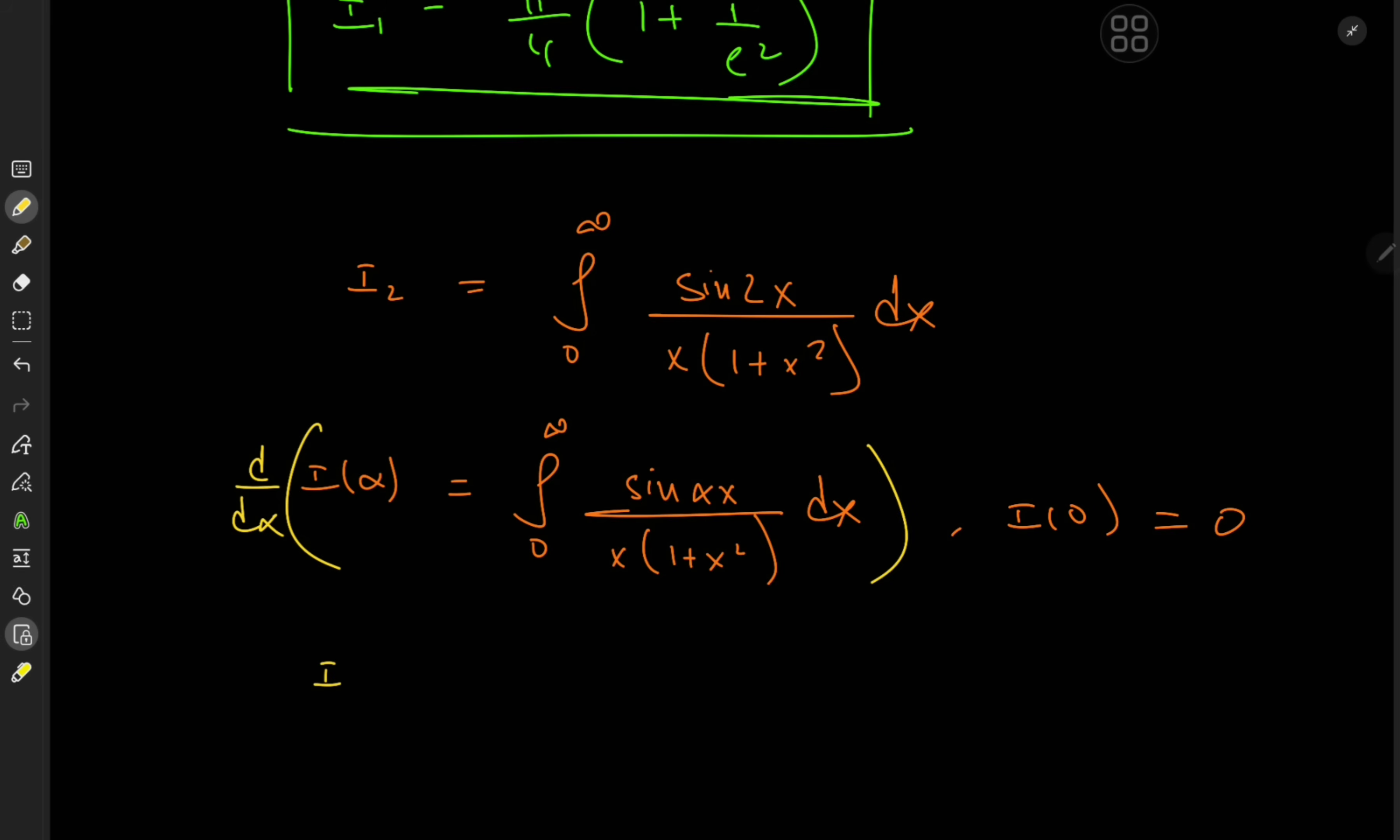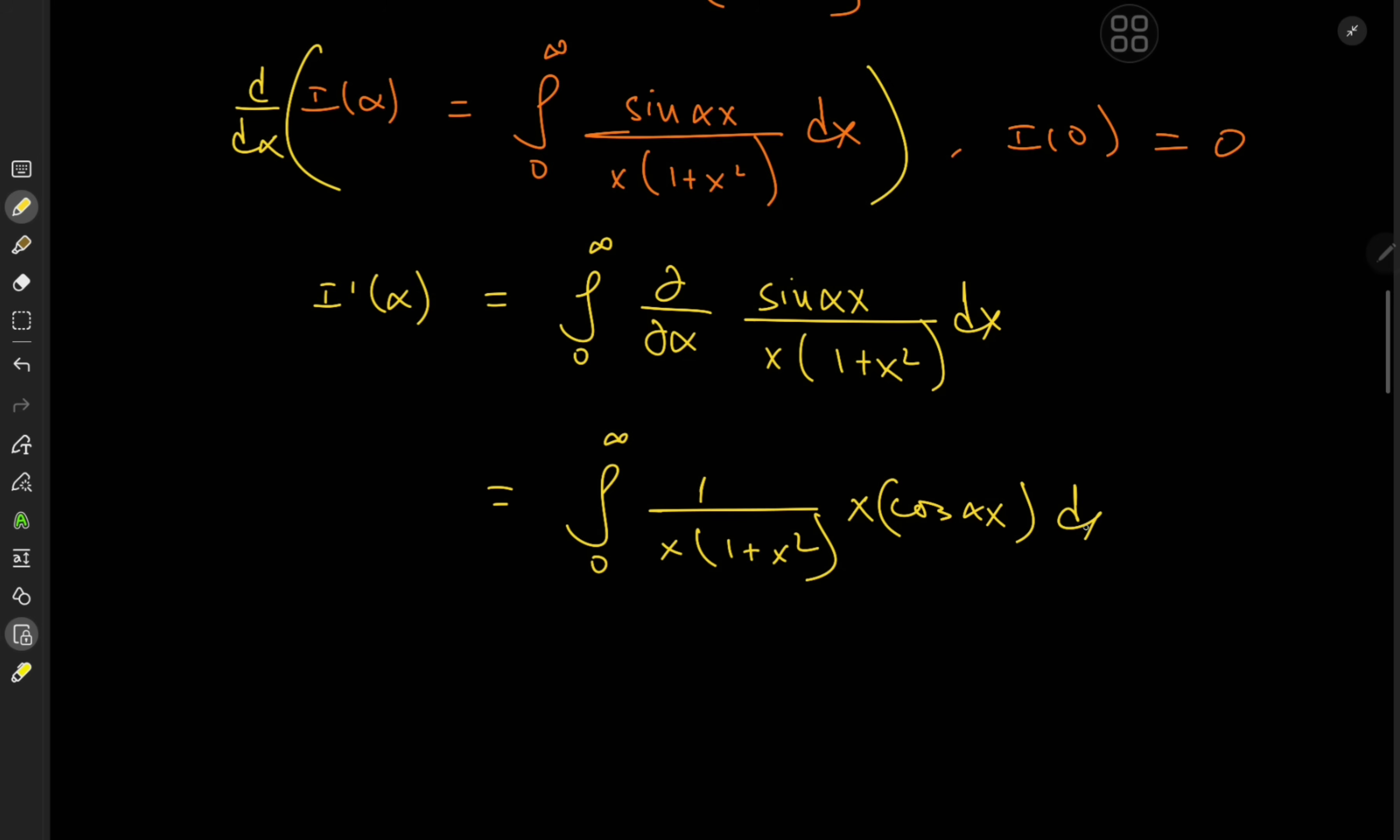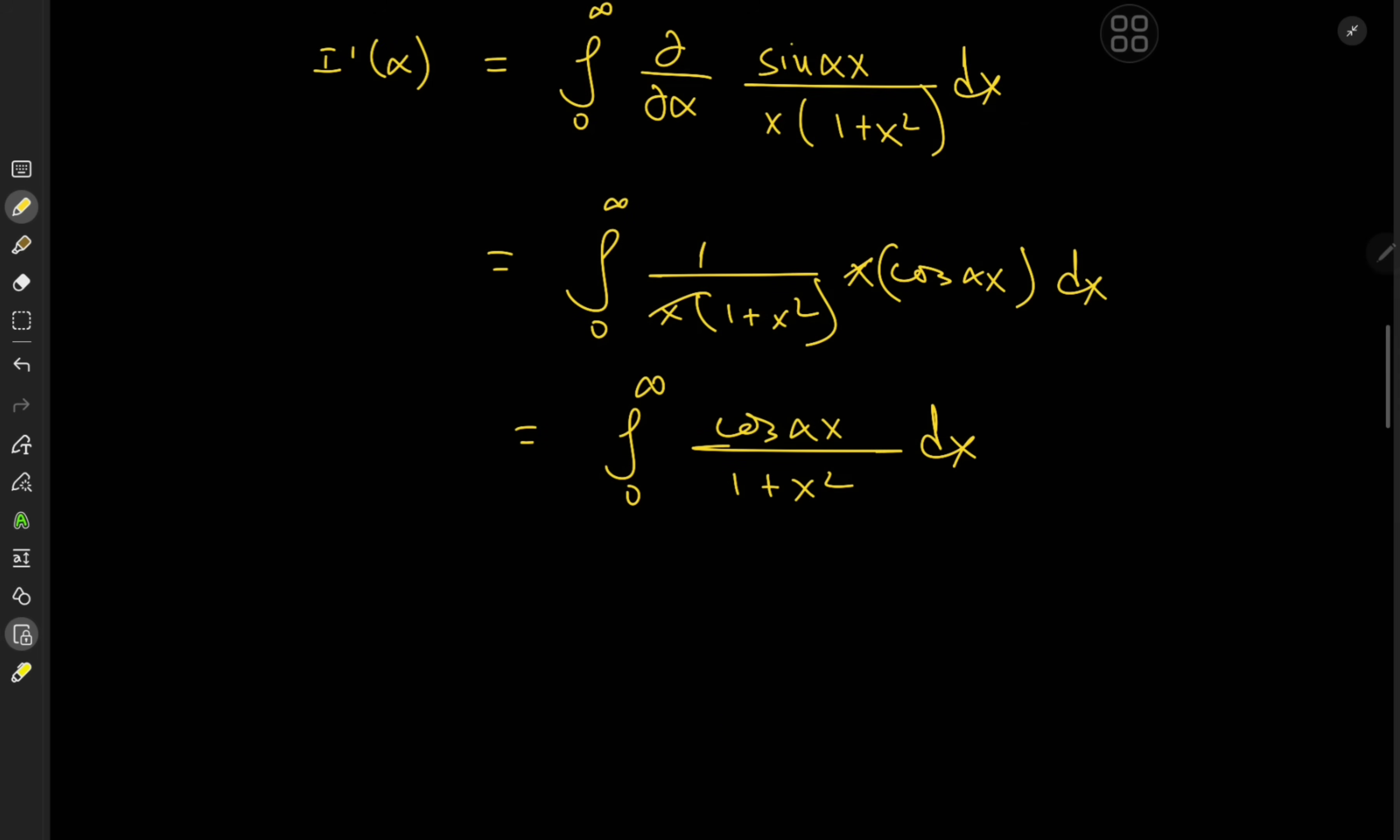So of course we will differentiate this thing with respect to the parameter alpha and that gives us i prime of alpha on the left equal to on switching up the order of the integration and differentiation operators we will have the integral from 0 to infinity of now the partial derivative with respect to alpha because of the Leibniz rule sin of alpha x over x times 1 plus x squared dx so we're differentiating partially with respect to alpha which means that the x times 1 plus x squared term that's just what I'm writing over here is treated as a constant and we have the derivative of sin alpha x which is cosine alpha x and because of the chain rule we have x over here as well which cancels out quite nicely and now we have again the familiar looking integral that is cosine alpha x over 1 plus x squared dx and this thing converges to one half of pi over e to the alpha which looks absolutely gorgeous.